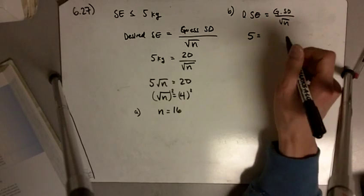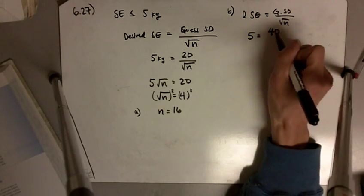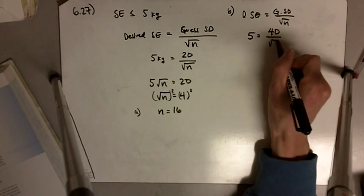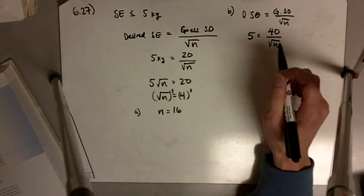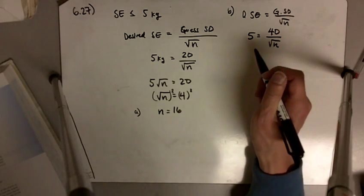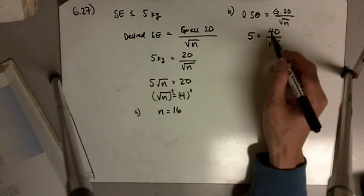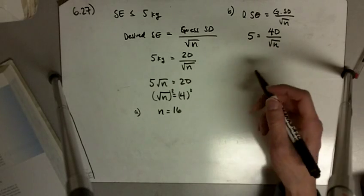So we still want 5, but if we bring this up to 40, does the required number of cattle double? Well, let's see what happens. So does it double to n equal to 32?